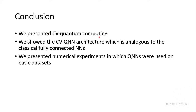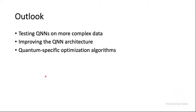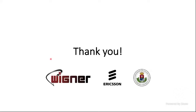In conclusion, we presented the continuous variable quantum computing formalism and showed that continuous variable quantum neural networks work as universal quantum approximators. We presented numerical experiments in classification, regression, and variational quantum eigensolvers. In future work, we want to test quantum neural networks on more complex data, improve the QNN architecture, and develop quantum-specific optimization algorithms. Thank you for your attention.